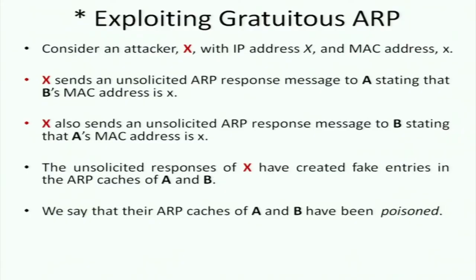So how do we exploit gratuitous ARP? Consider an attacker X with IP address X and MAC address x. X sends an unsolicited ARP response message to A stating that B's MAC address is x. This poisons the ARP cache of A. X also sends an unsolicited ARP response message to B stating that A's MAC address is x. The unsolicited responses of X have created fake entries in the ARP caches of both A and B — their caches have been poisoned.